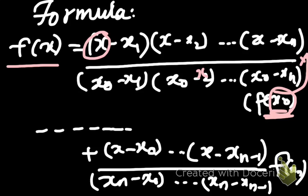Here we can observe that, in the first one, since it is x0, you don't have an x minus x0. You omit the x minus x0. You only have x minus x1, x2, and xn. Whereas in the denominator, you have x0 minus x1, x0 minus x2, and so on.